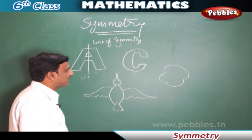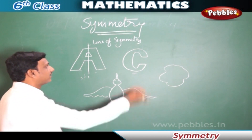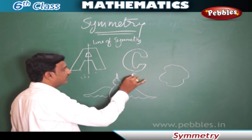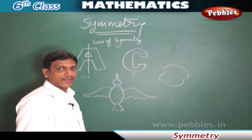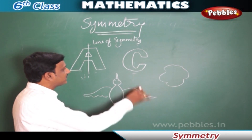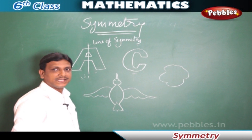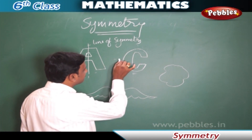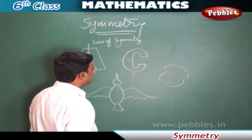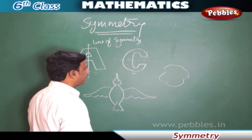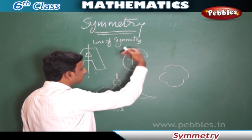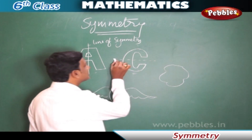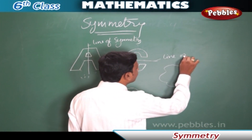Now let us see this figure. Can we say it has got line symmetry? If I try to draw a line like this, will both parts be identical? No. Let us try the line in another direction. If we draw a line in the horizontal direction and fold this figure down, both the parts match exactly. So this line is called the line of symmetry.